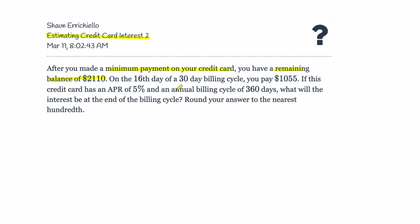Now it depends on the card, but we're assuming this card has a 30-day billing cycle, and on the 16th day you make another payment. So the billing cycle is not over — usually you pay at the end of the billing cycle, but you're going to pay ahead of time. If this credit card has an APR of 5% — that's the annual percentage interest rate — and an annual billing cycle of 360 days, what will the interest be at the end of this billing cycle?